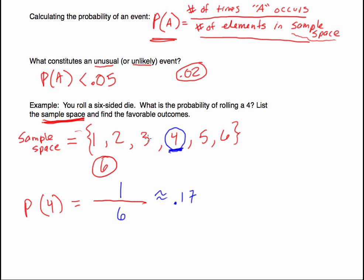This is the sample space approach. If you can write out all the possible outcomes and circle the ones favorable to the event you're describing, you look at how many are circled out of the total — in this case, 1 out of 6. The problem is, as we move to compound probability, you're not always going to be able to create the sample space and list out all possible combinations.